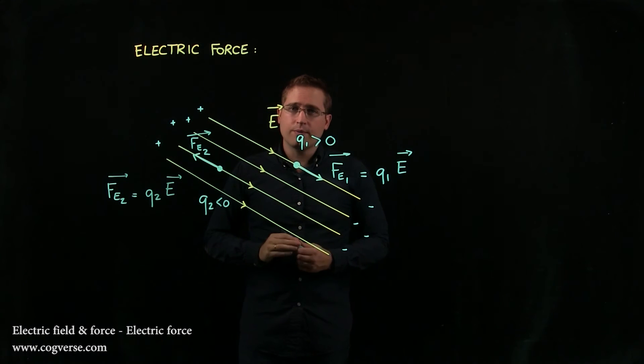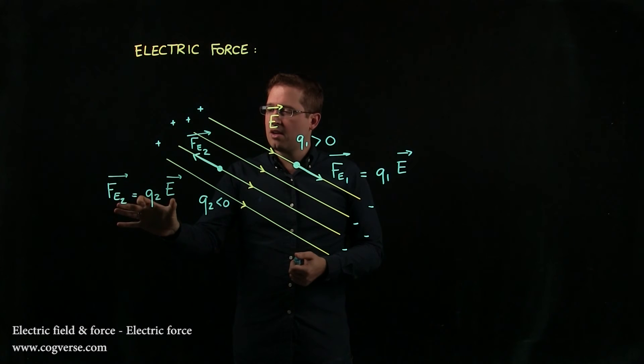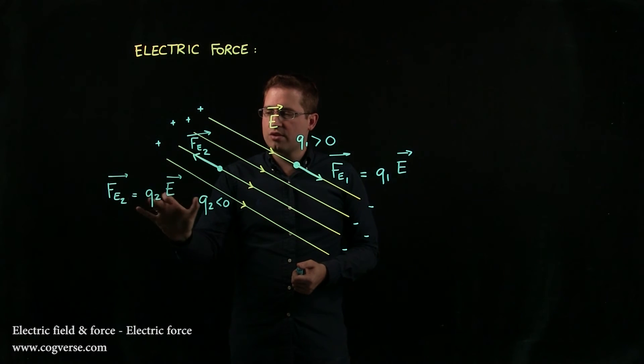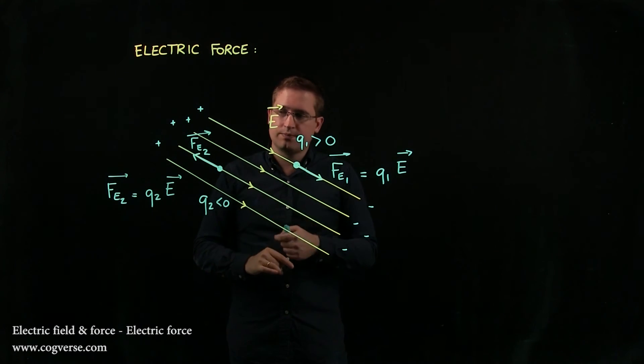Now, be careful. Because Q2 is negative, in fact, these two vectors, Fe2 and E, point in opposite directions.